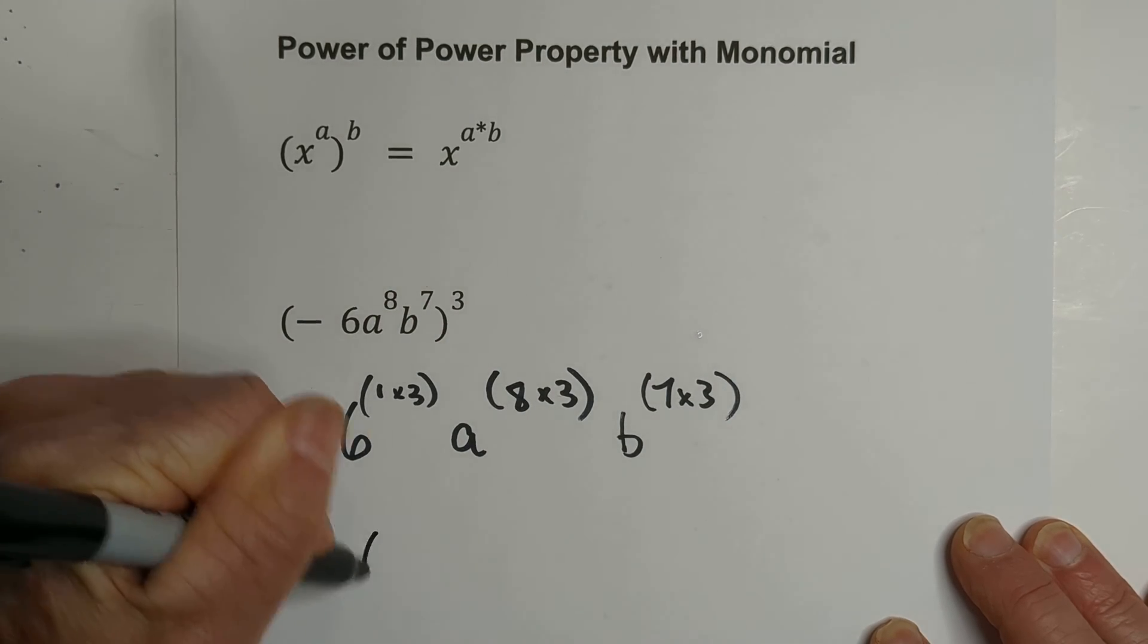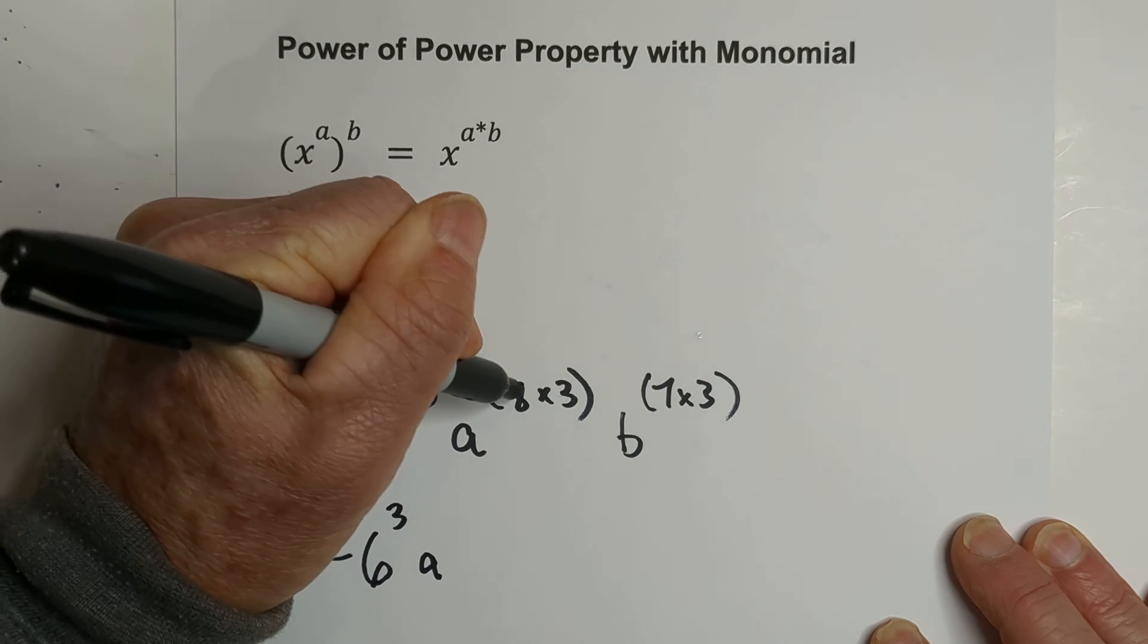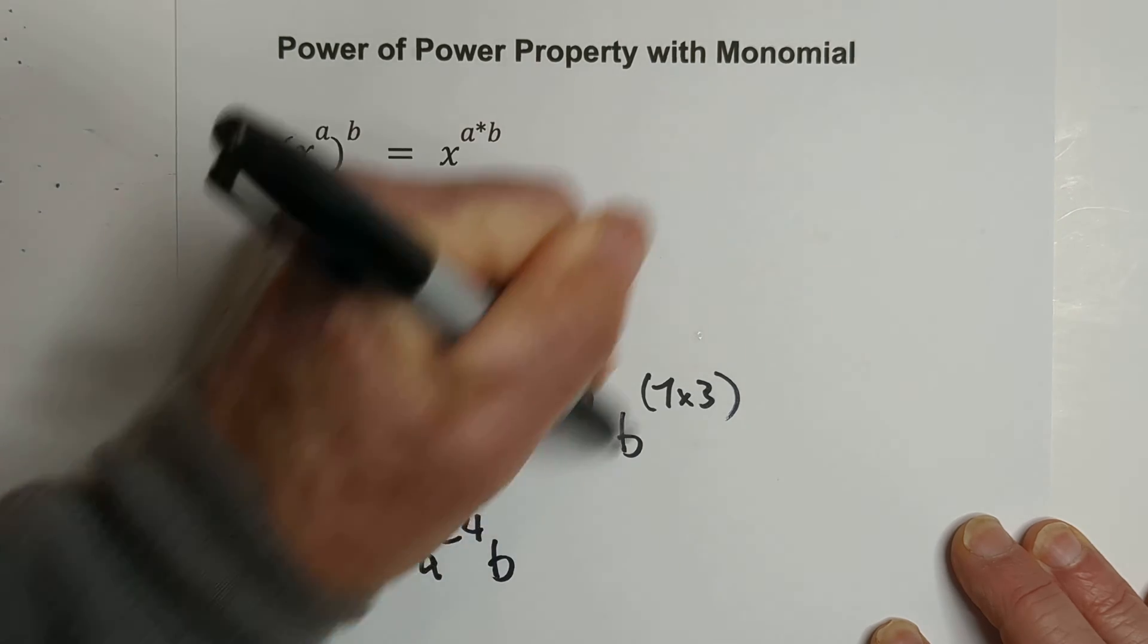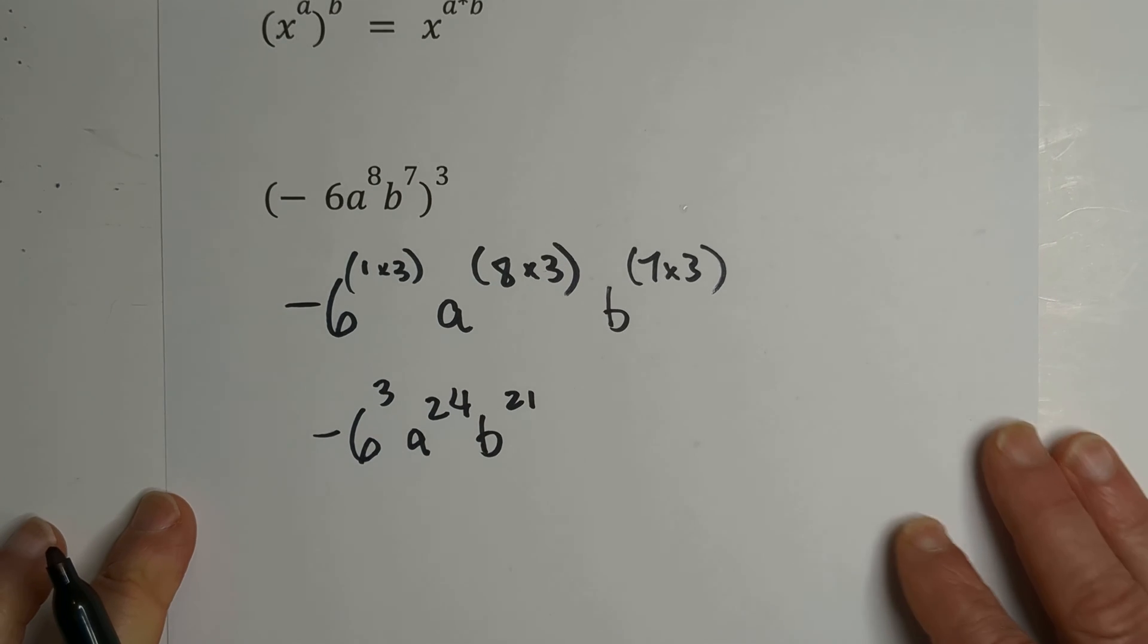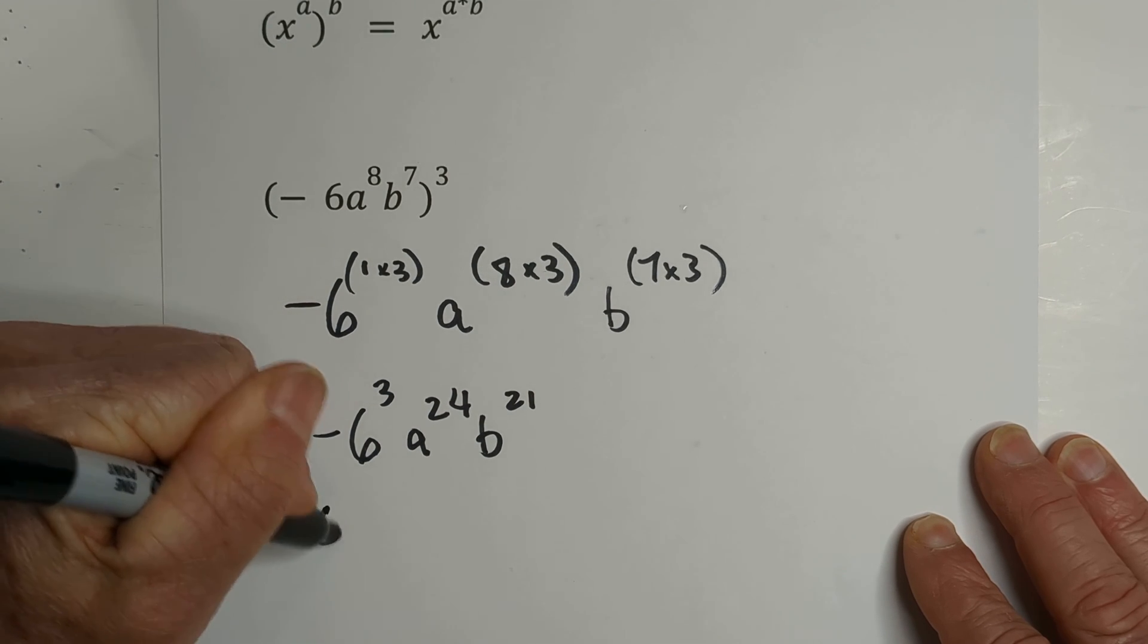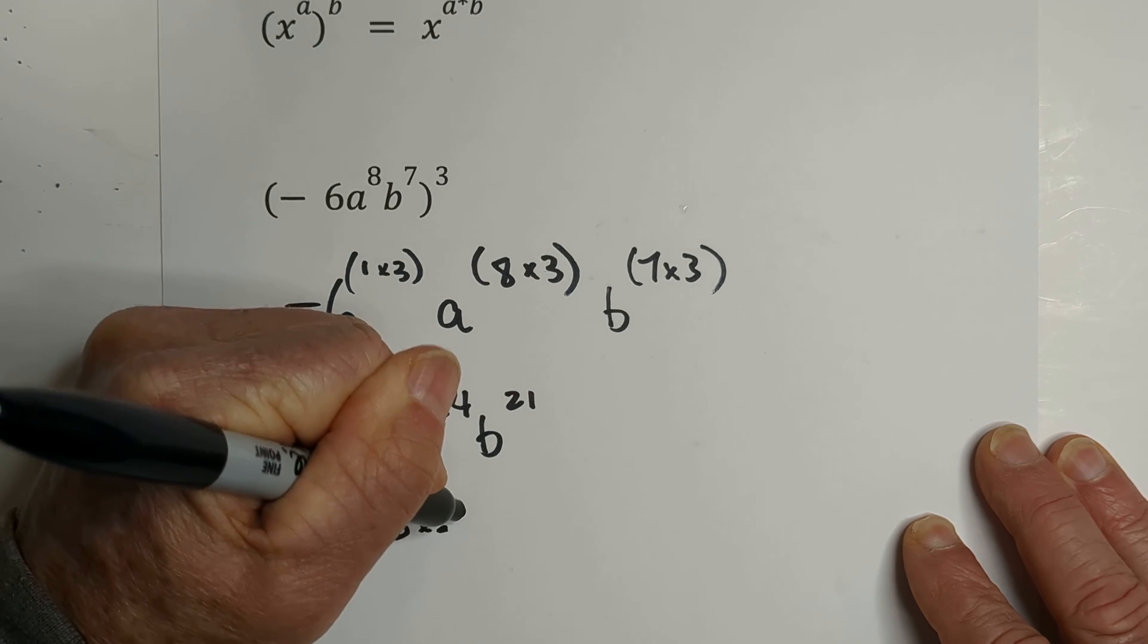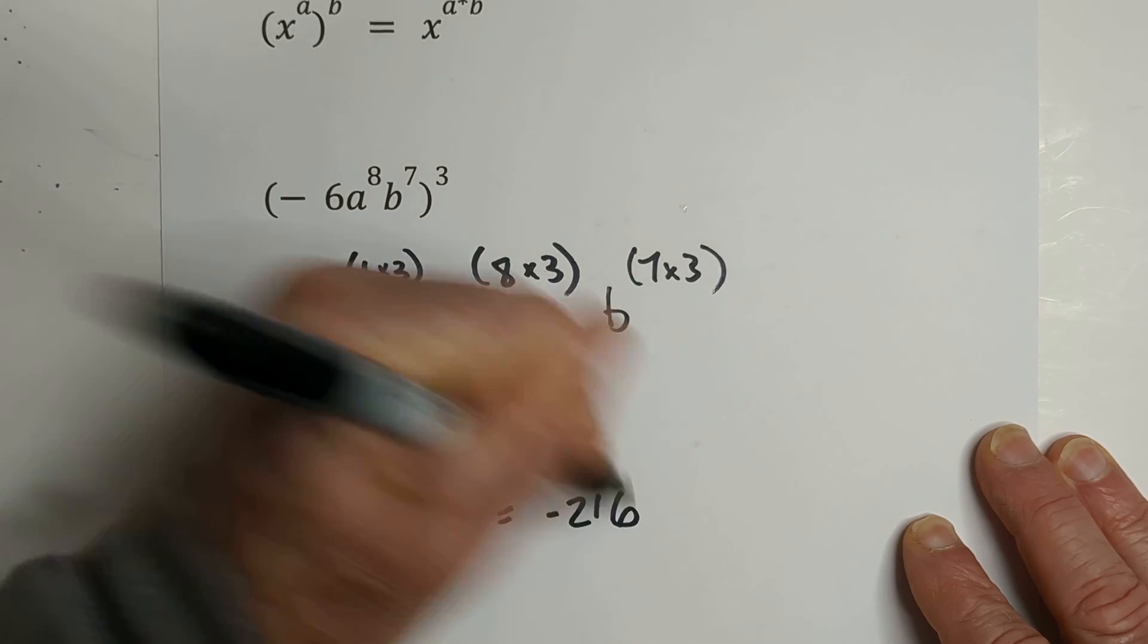When you multiply this, we have negative 6 to the 3rd, A to the 8 times 3 is 24, and B, 7 times 3 is 21. Now, this negative 6 is negative 6 times negative 6 times negative 6, and that equals negative 216.